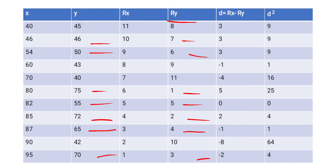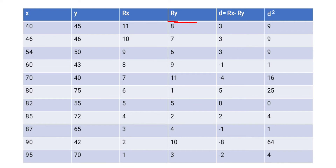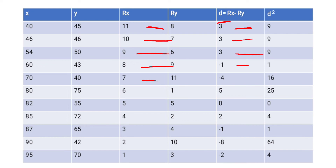After finding Rank of X and Rank of Y, the same procedure applies as when ranks are given directly. If you have not watched Part A, the link is in the description box. Next, find D, the difference between RX and RY values: 11−8=3, 10−7=3, 9−6=3, 8−9=−1, 7−11=−4, 6−1=5, 5−5=0, 4−2=2, 3−4=−1, 2−10=−8, 1−3=−2.